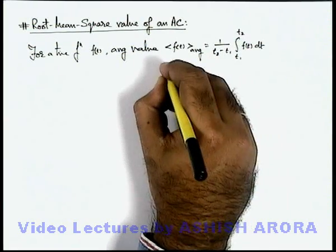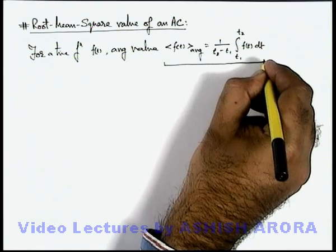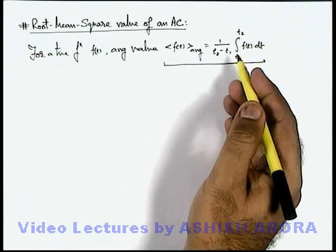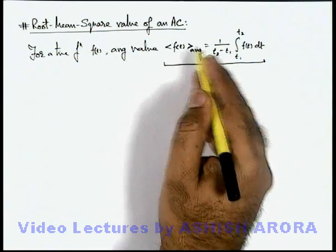This is a generalized average function formula using which we can calculate average current or any average of function which varies with time.